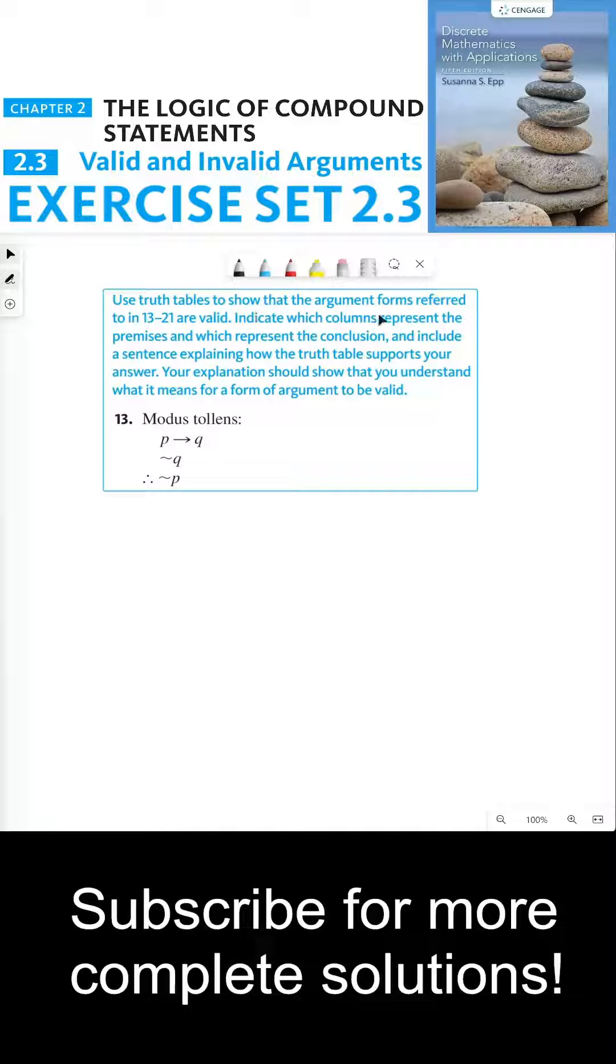Use truth tables to show that the argument forms referred to in 13 through 21 are valid. Indicate which columns represent the premises and which represent the conclusion, and include a sentence explaining how the truth table supports your answer. Your explanation should show that you understand what it means for a form of argument to be valid.